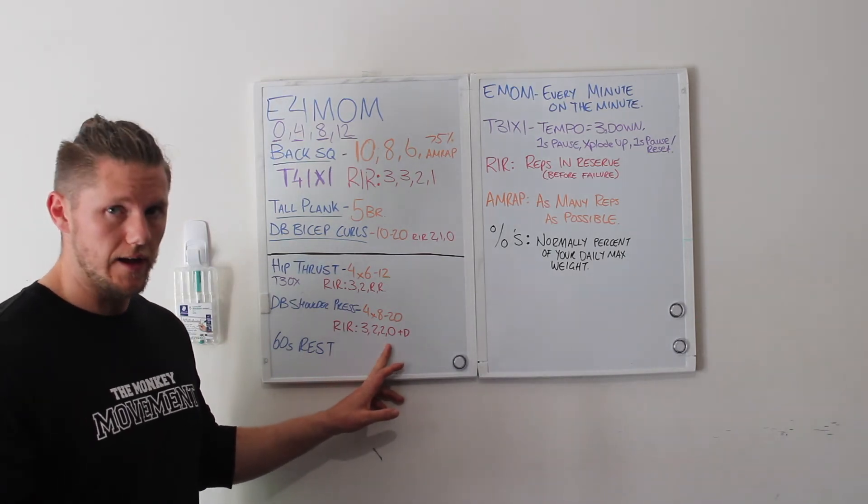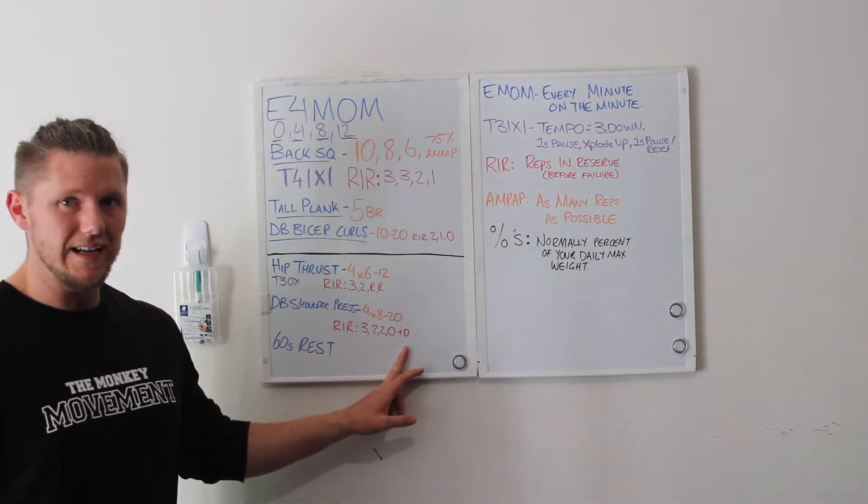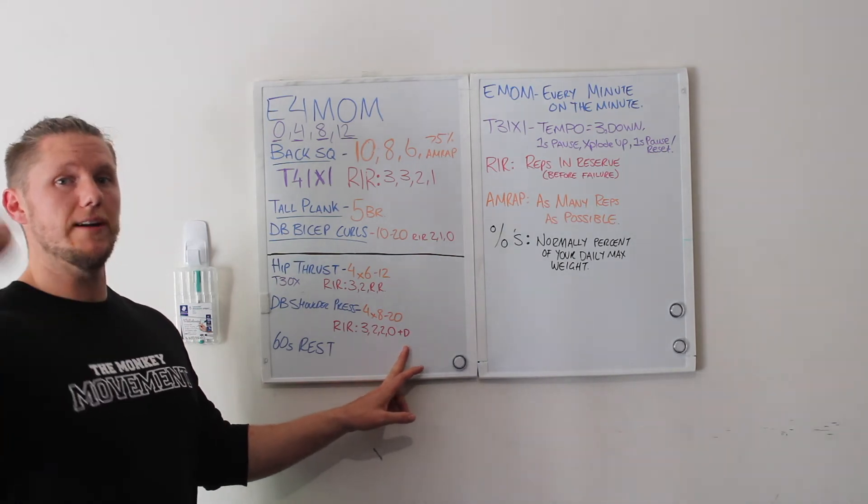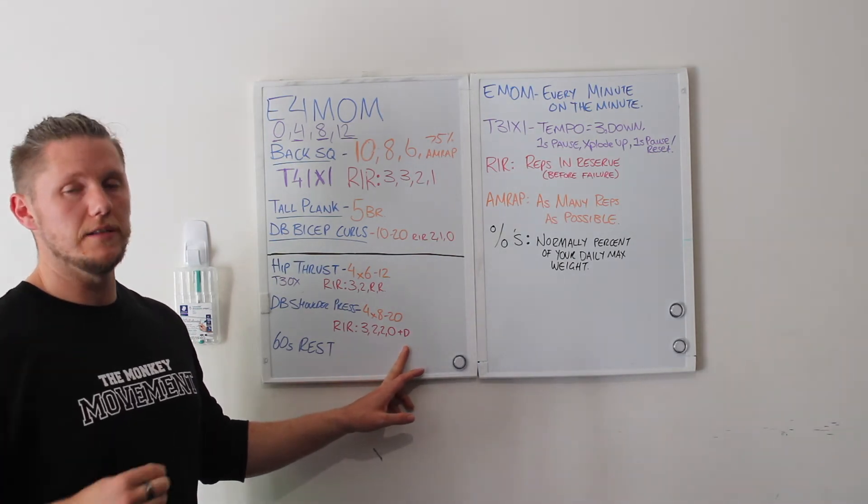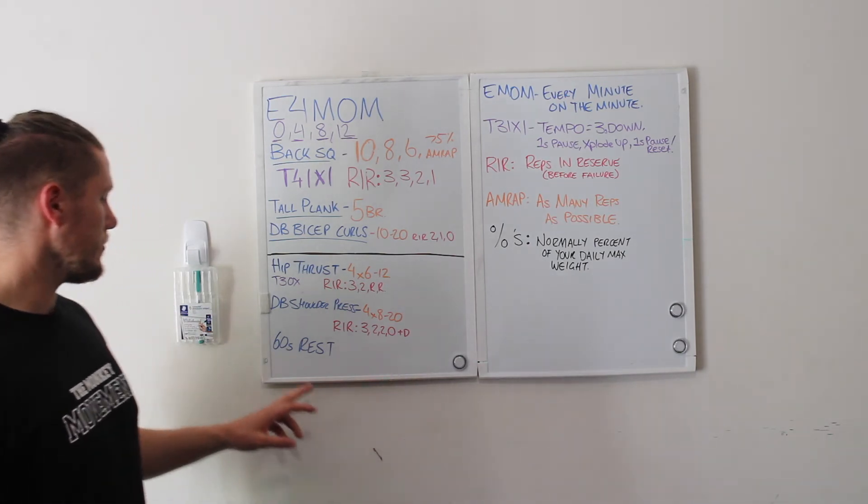Reps in reserve three, two, two, zero. So that means failure. That means technical failure on a shoulder press, meaning I'm not using my legs. But then I've got a little DS here, that's a drop set, which means you would go and get some lighter dumbbells and you would press them all the way to failure again. It's another good way to pick up the intensity in our training.